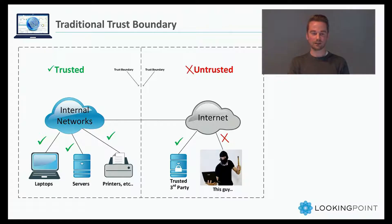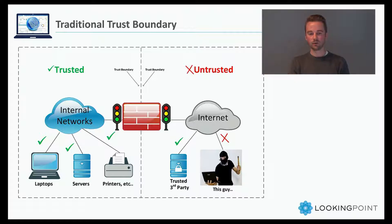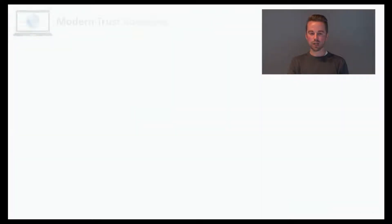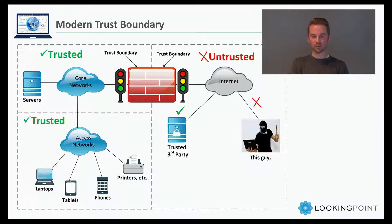The internet was untrusted. Internal networks were trusted. In order to enforce policy at this trust boundary, we installed network firewalls. Now, looking forward at a more modern trust boundary, things have changed a little bit. We've got the internet untrusted and our internal networks trusted. We've differentiated between our core networks and our access networks. Our core networks typically have fixed assets connecting to them inside of a locked closet, so those stay trusted. Our access networks mostly have mobile devices connecting to them — laptops, tablets, iPhones, BYOD devices.